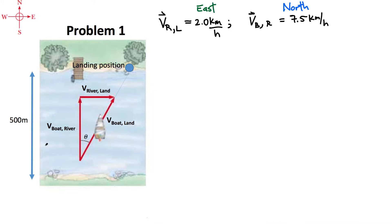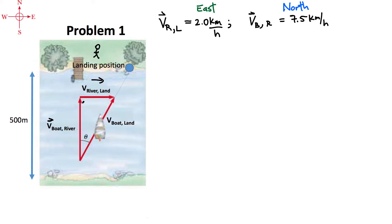We're going to set up this problem. The distance from shore to shore is 500 meters. I'm going to give you two quantities: the velocity of the river relative to the land — someone standing on the land will see the river flowing east at 2 kilometers per hour. The other quantity is the velocity of the boat relative to the river. For problem one, the velocity of the boat relative to the water is due north — straight up.